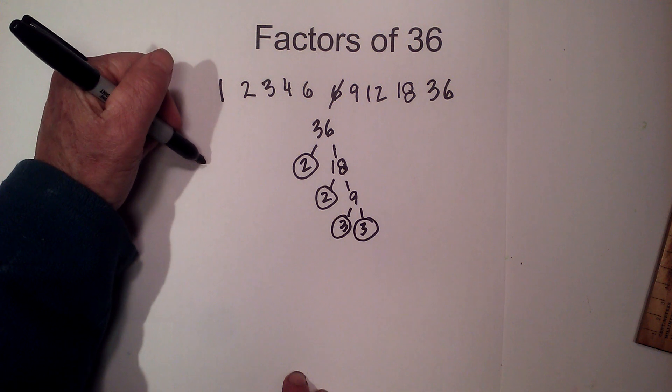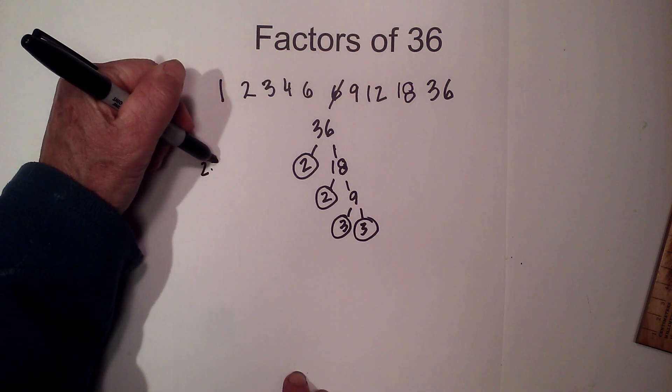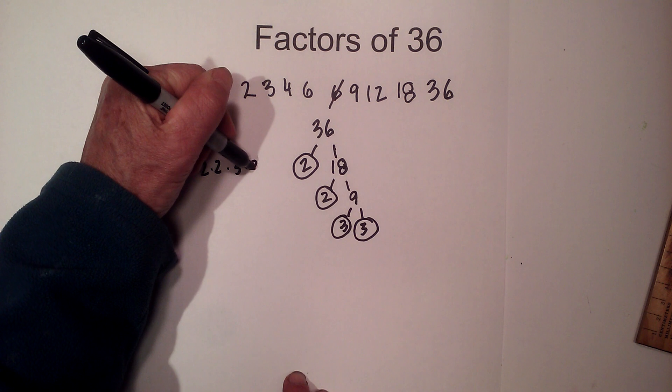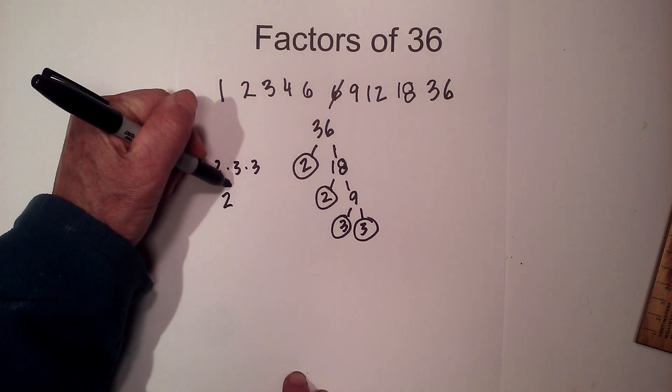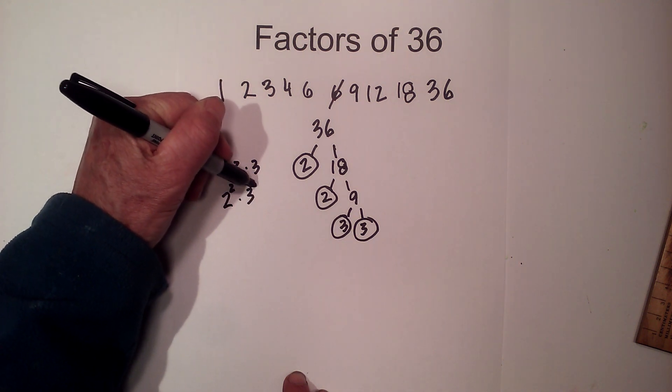So the prime factors of 36 are 2 times 2 times 3 times 3 or 2 squared times 3 squared.